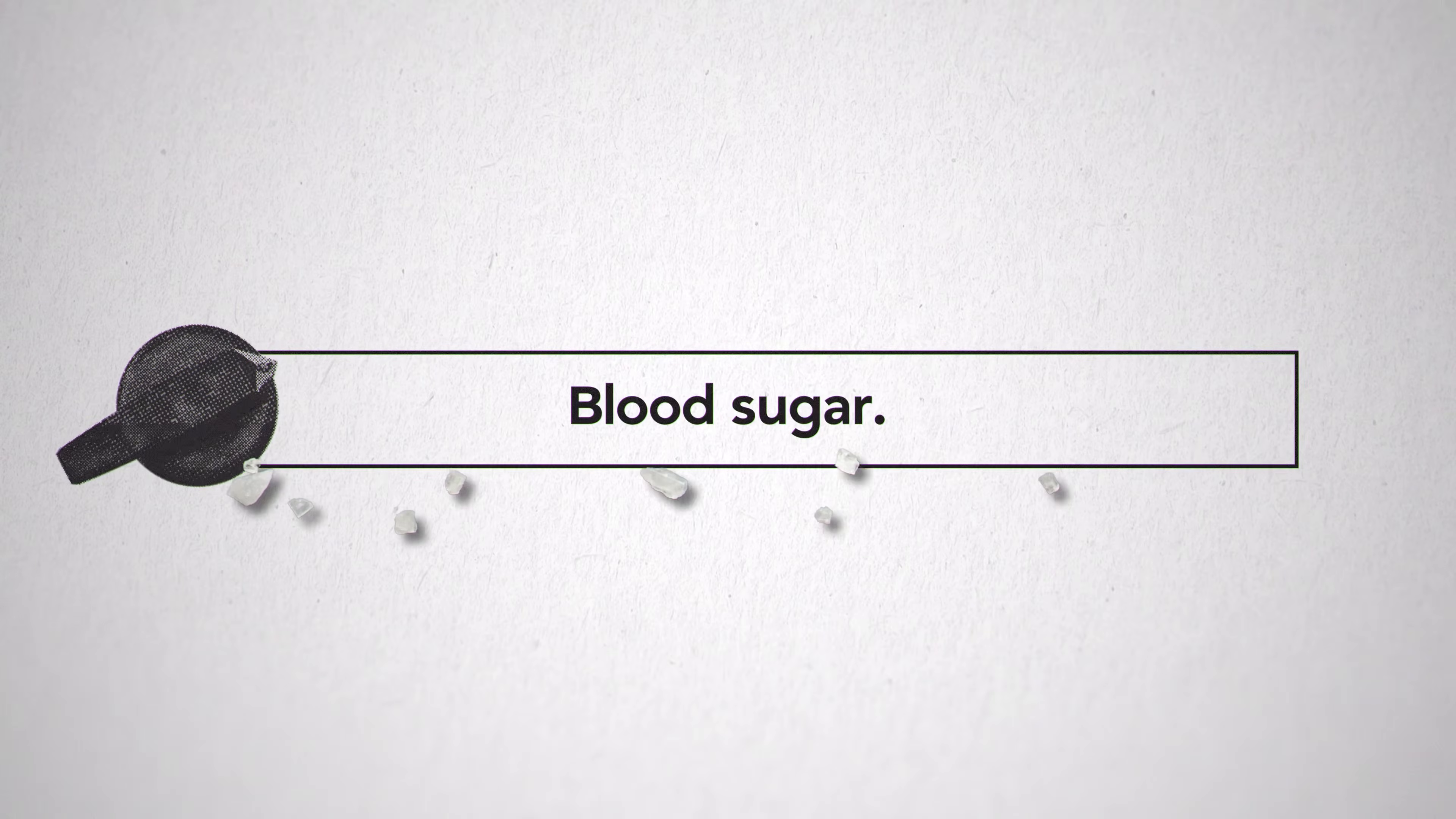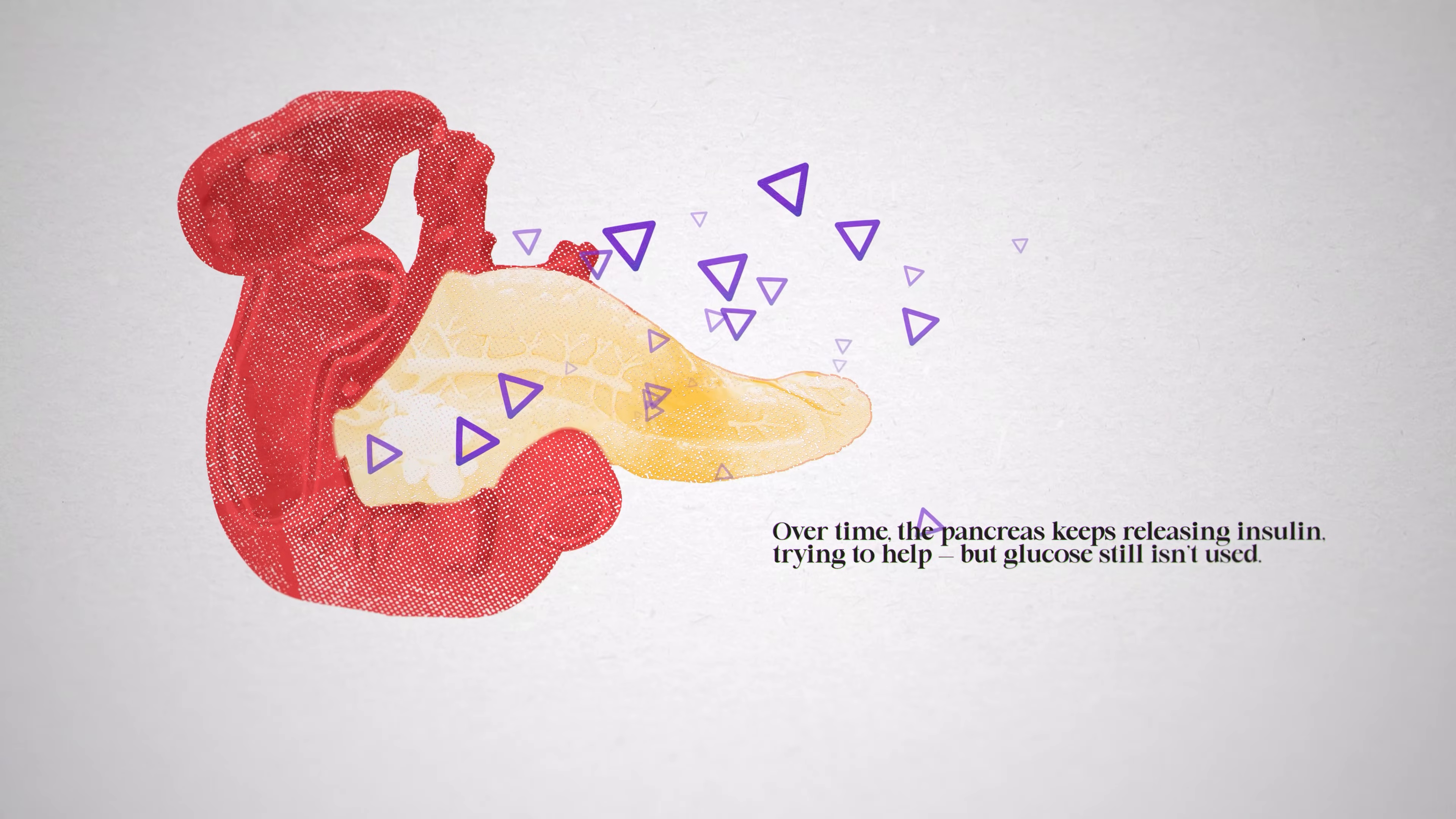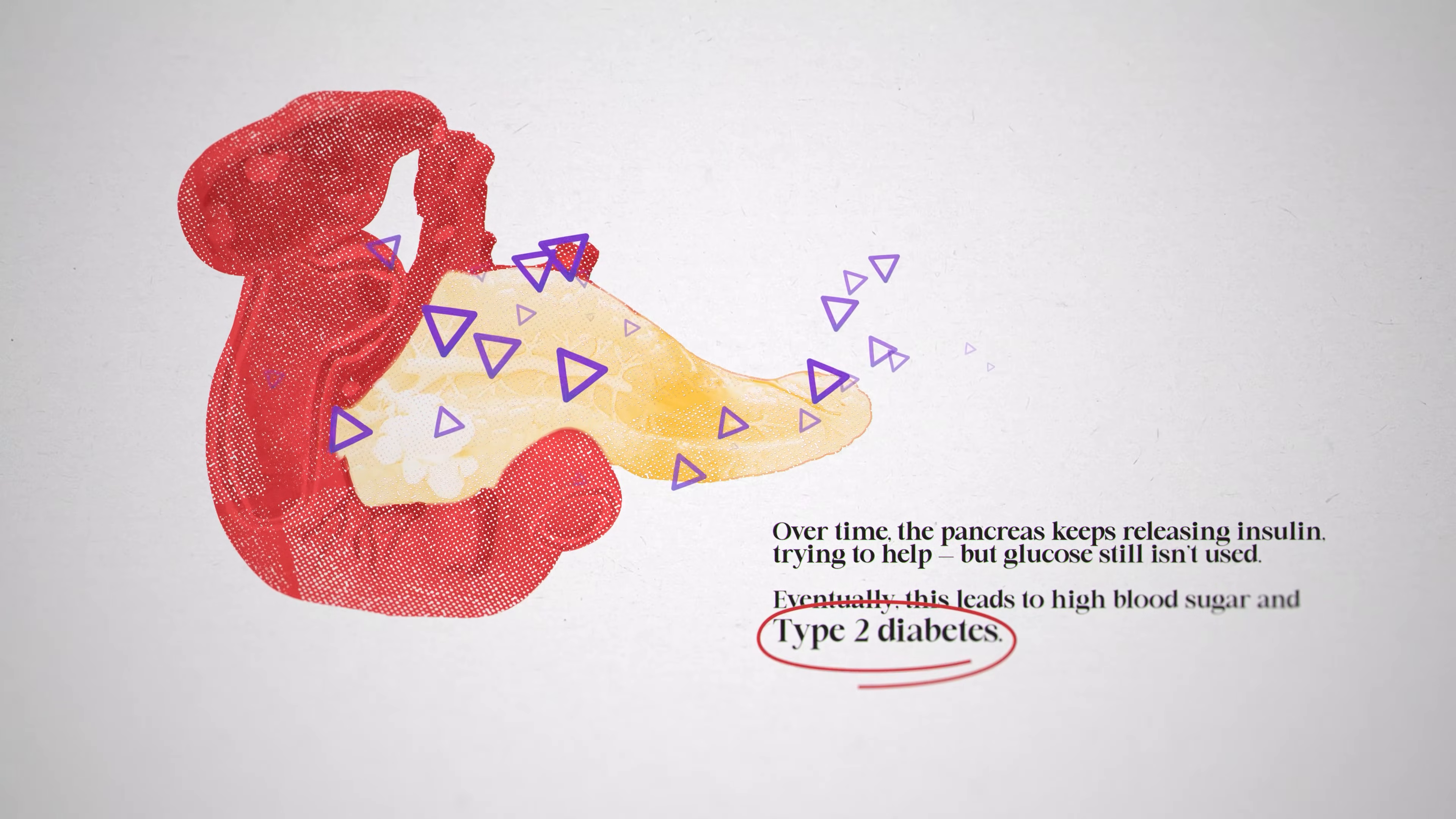As the fatty acid burn switch continues over time, blood sugar levels begin to rise. First after meals, then even during fasting. Over time, the pancreas keeps releasing insulin, trying to help, but glucose still isn't used. Eventually, this leads to high blood sugar and type 2 diabetes.